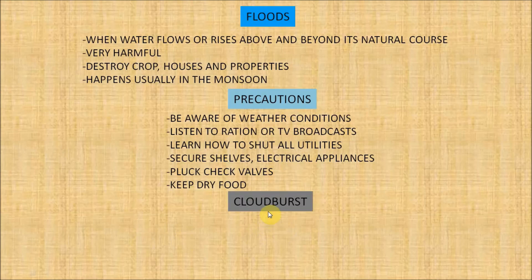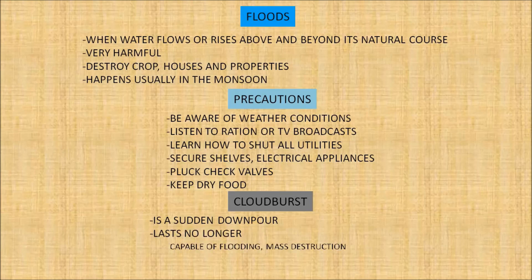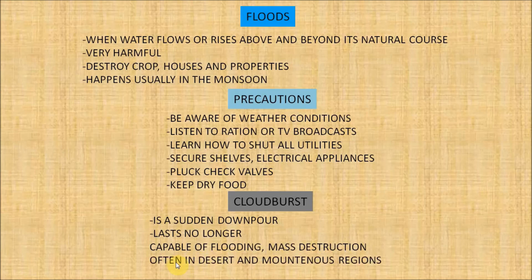Now let's see about cloudbursts. A cloudburst is a sudden downpour within a radius of a few kilometers. It usually lasts no longer, but it is capable of flooding the area and causes mass destruction. Cloudbursts occur mostly in desert and mountainous regions and in interior regions of continental land masses. During a cloudburst, more than 2 cm of rain may fall in a few minutes.